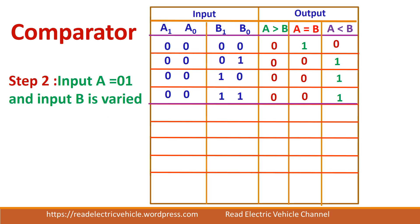Next we will do the second step. So in second step you make A equal to 0, 1. So first we made A equal to 0. Now we are going to mark A is equal to 0, 1. Then again you vary the input B for all the 4 conditions.